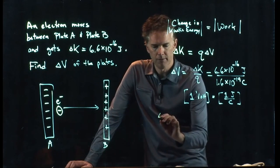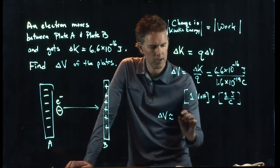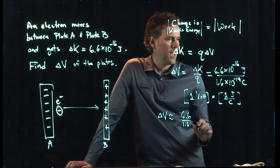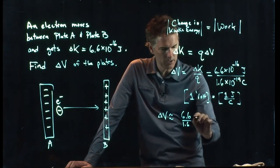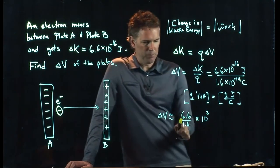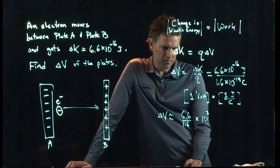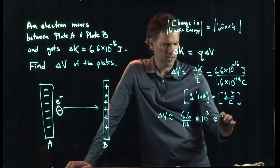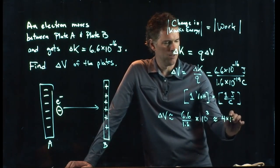Now we can plug in all these numbers. Delta V. I'll approximate it here if you want to punch into your calculator. You can try it. I get 6.6 over 1.6. And I have a 10 to the minus 16. I have a 10 to the minus 19 in the denominator. So, that gets me a 10 to the 3. 6.6 over 1.6 is, that's got to be pretty close to 4. I'm going to say that's about 4. And we have a 10 to the 3.